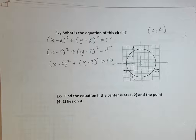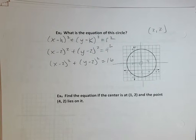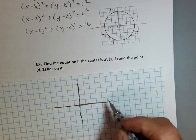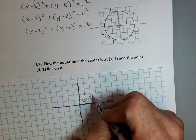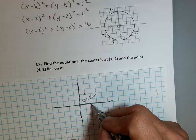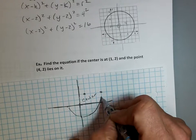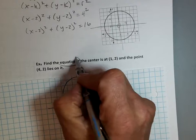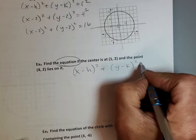Now, example four: find the equation if the center's at one, two and the point's at four, two. If I could graph this, it might help. So I'm going to graph this one. I've got the point one, two — here's my center — and I have another point at four, two. So my circle's going to look something like this. So, again, I want the equation. I'll start with x minus h squared plus y minus k squared equals r squared.